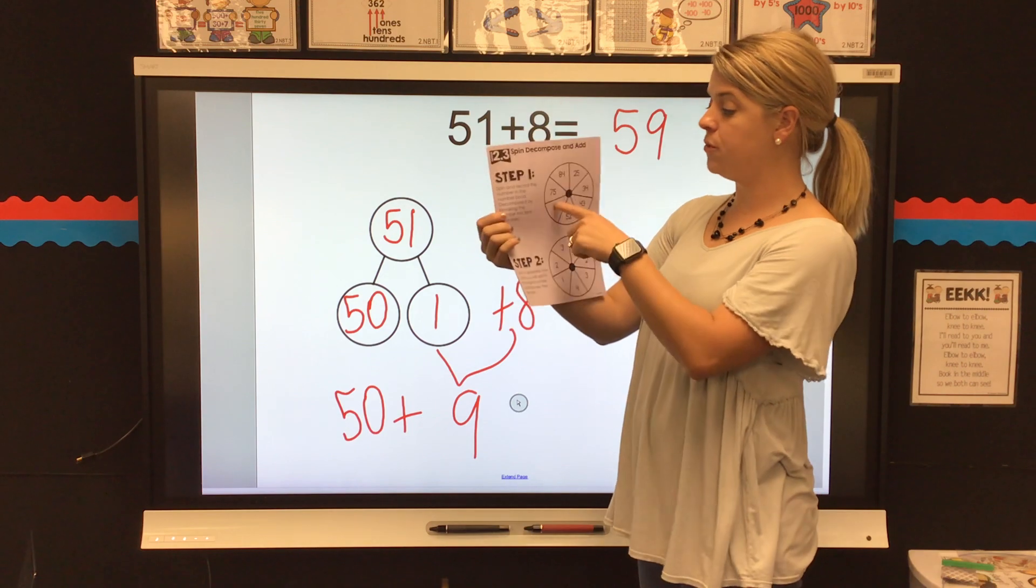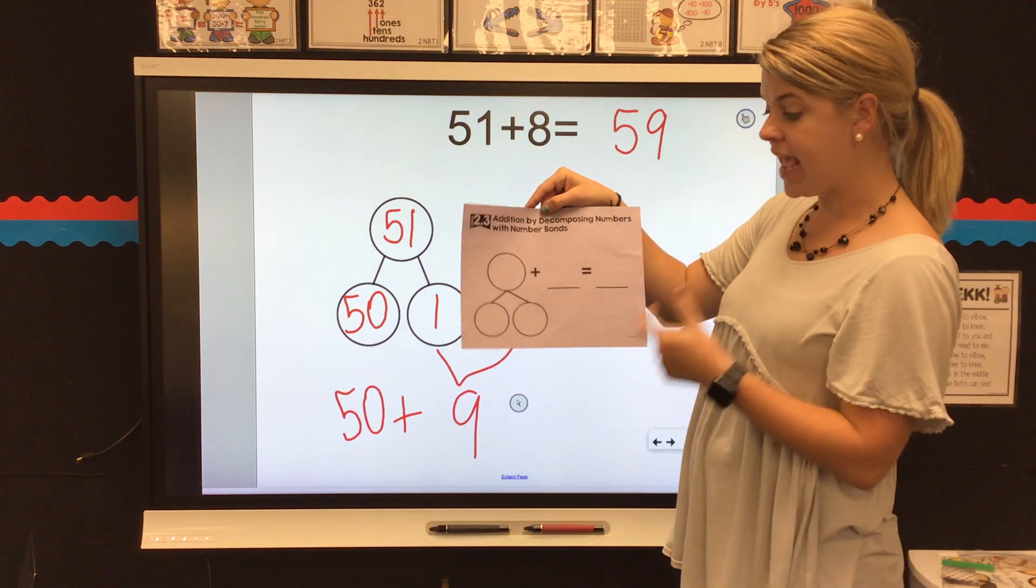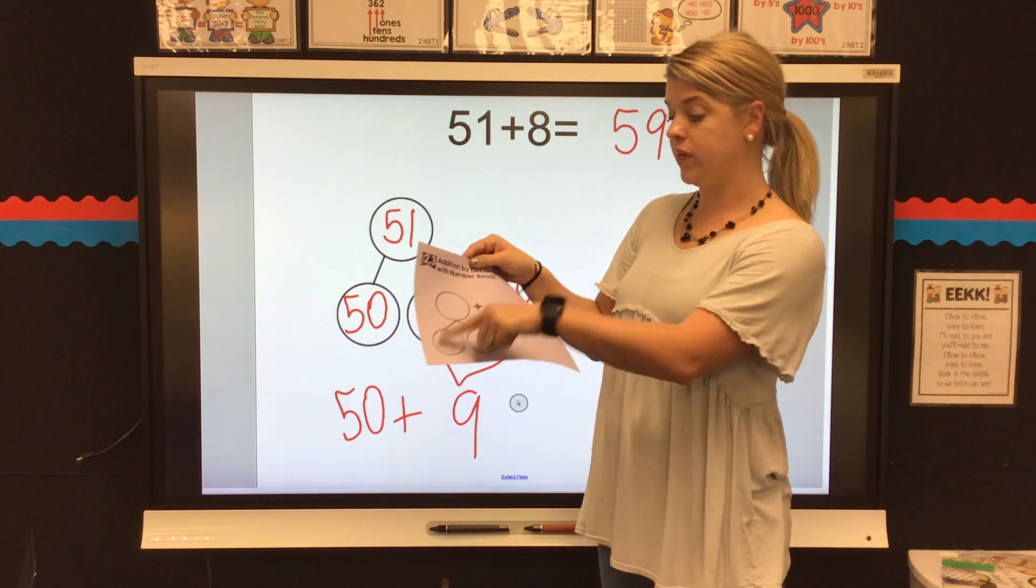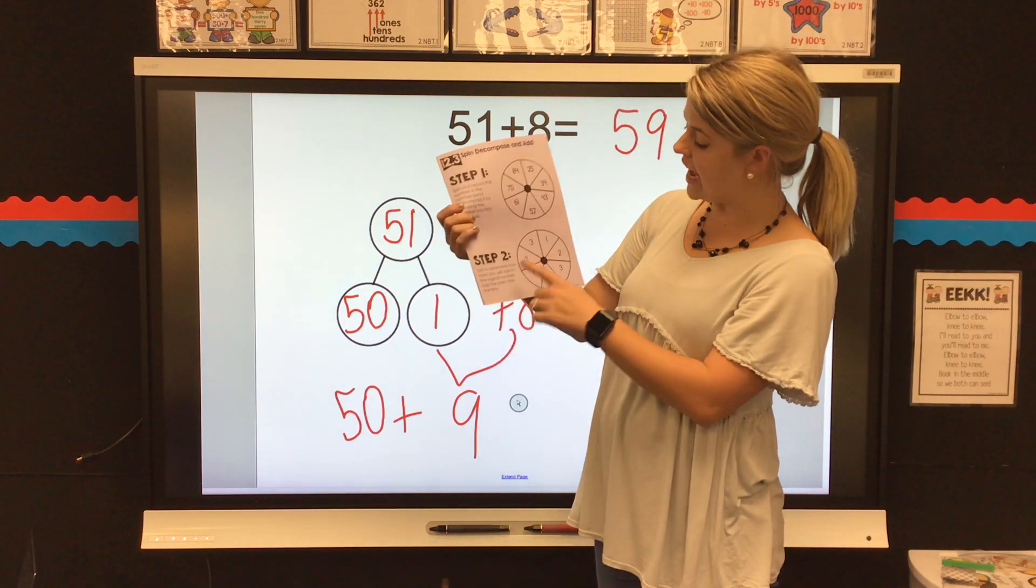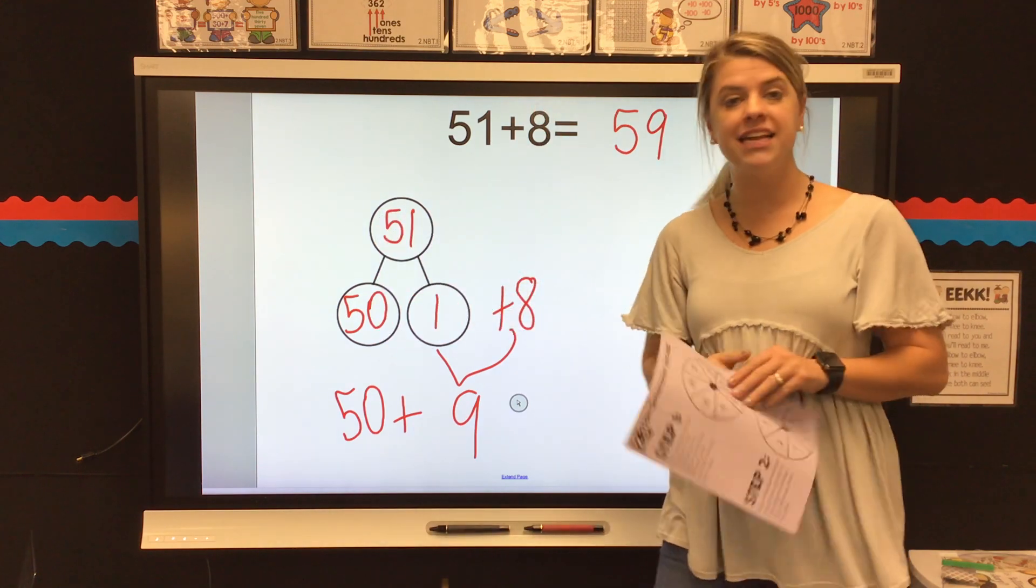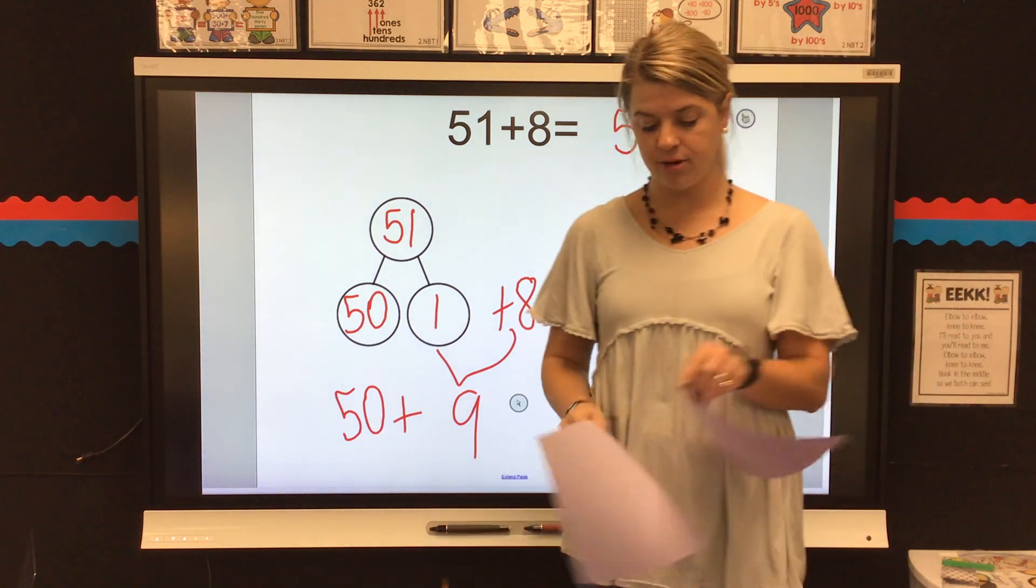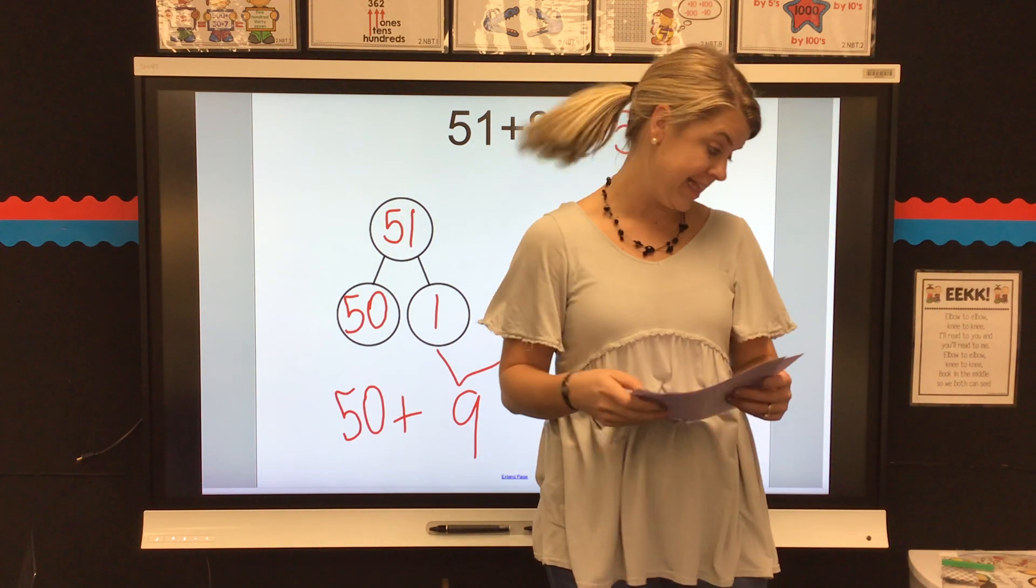Step one, spin, and you're going to put your biggest number in the top part of your number bond, remember? Then, you're going to break it down and put the second spin right here. You can do that as many times as you would like until you're comfortable with putting numbers into those number bonds to break them down.